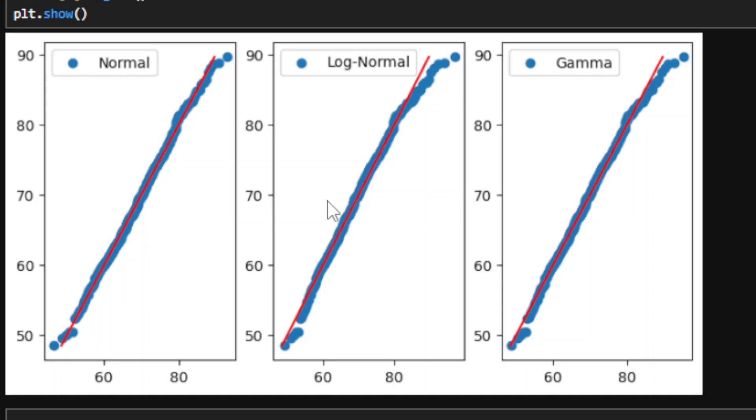We can see that, particularly for the log normal distribution, the tail end of the distribution for the theoretical distribution is not aligning well with the empirical data. It is deviating from our 45-degree line, and it is also increasing in a nonlinear sense, an indicator that it is probably not the right distribution to select for this data.